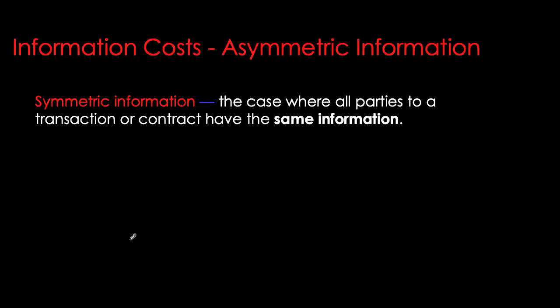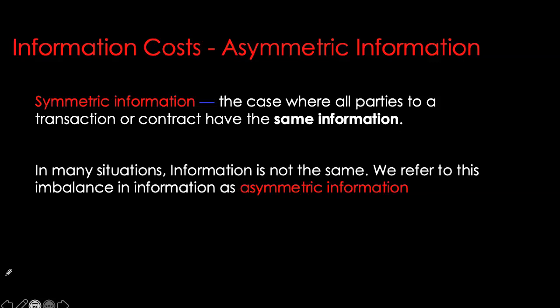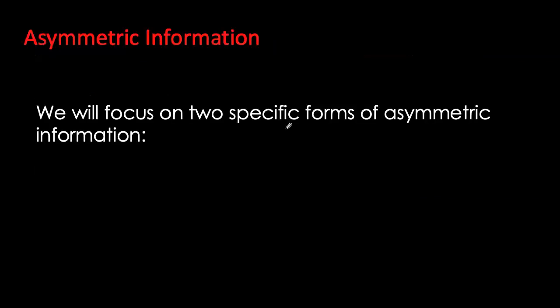We'll also look at how financial intermediaries actually reduce these asymmetric information costs. In order to do that, first we need to know what asymmetric information is. In our typical demand-supply framework examined in principles of economics courses, we don't really think about information at all. For example, in the labor market we assume employers know the productivity of their workers, and thanks to competition they always pay them exactly the value of what they produce — price always equals marginal cost. However, this is not true in most situations.